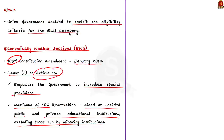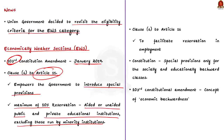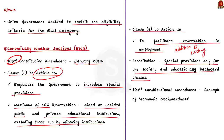Secondly, the amendment added Clause 6 to Article 16 of the constitution to facilitate reservation in employment. These new clauses made it clear that EWS reservation will be in addition to the existing reservation. As we know, the constitution initially allowed such special provisions only for the socially and educationally backward classes. But this notion was changed under the 103rd Constitutional Amendment Act, which introduced the concept of economic backwardness — designed for those not covered by or eligible for community-based quotas.